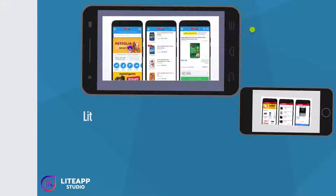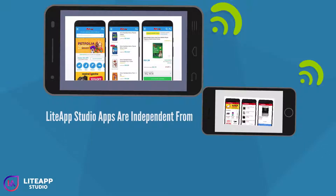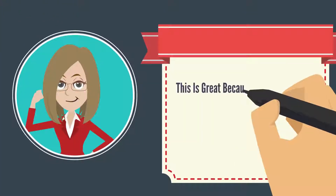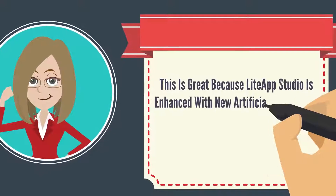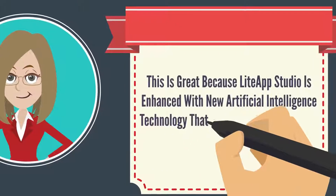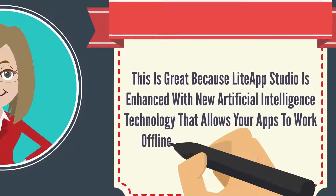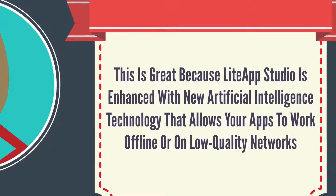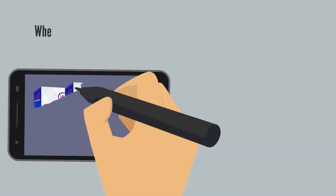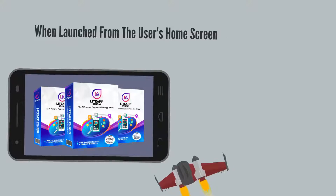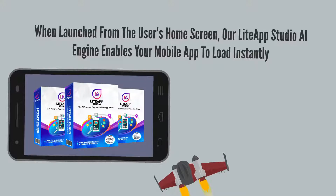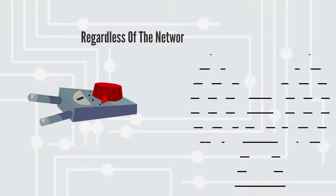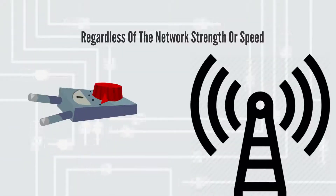Number five: Light App Studio apps are independent from internet connectivity or strength. This is great because Light App Studio is enhanced with new artificial intelligence technology that allows your apps to work offline or on low-quality networks. When launched from the user's home screen, our Light App Studio AI engine enables your mobile app to load instantly, regardless of the network strength or speed.